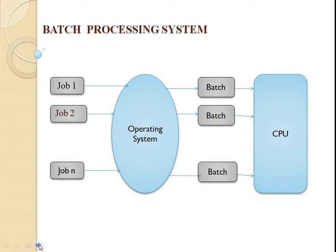The advantages of batch processing system are that it takes much of the work from the operator to the computer. It also increases performance as a new job gets started as soon as the previous job is finished without any manual intervention. The disadvantage of batch processing is that it is difficult to debug the program, a job could enter an infinite loop due to lack of a protection scheme, and one bad job can affect pending jobs.